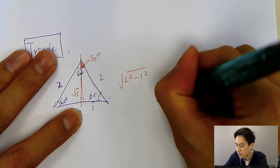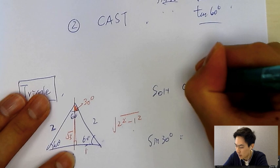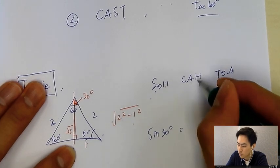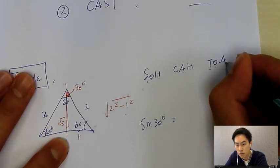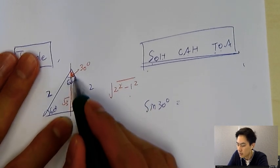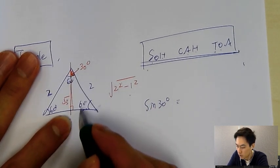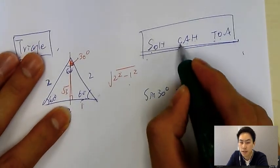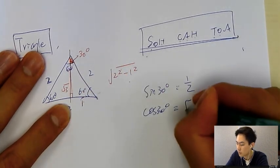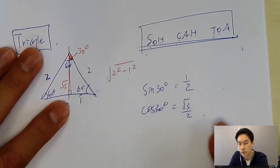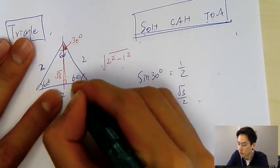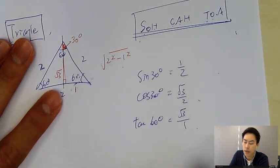Now that we have this triangle, we can use SOH-CAH-TOA. Sine is opposite over hypotenuse, cosine is adjacent over hypotenuse, tangent is opposite over adjacent. So sine 30 = 1/2, cosine 30 = √3/2, and tangent 60 = √3/1 = √3.